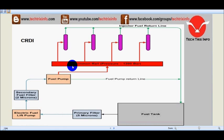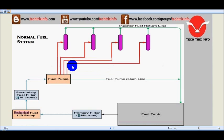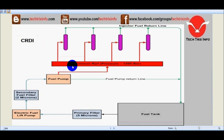To satisfy the BS4 norms, the CRDI system is required. You can see the difference between the block diagram of a normal fuel system and a CRDI system very clearly in this animation.